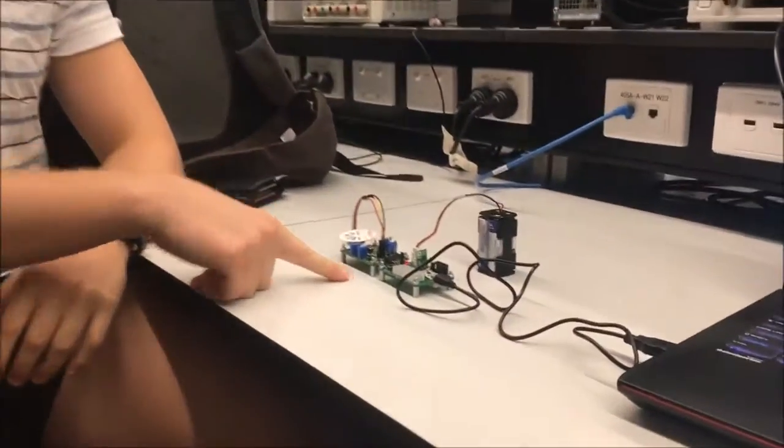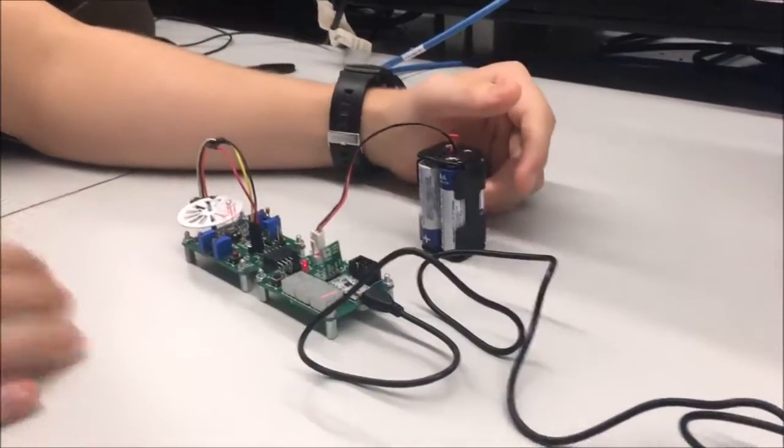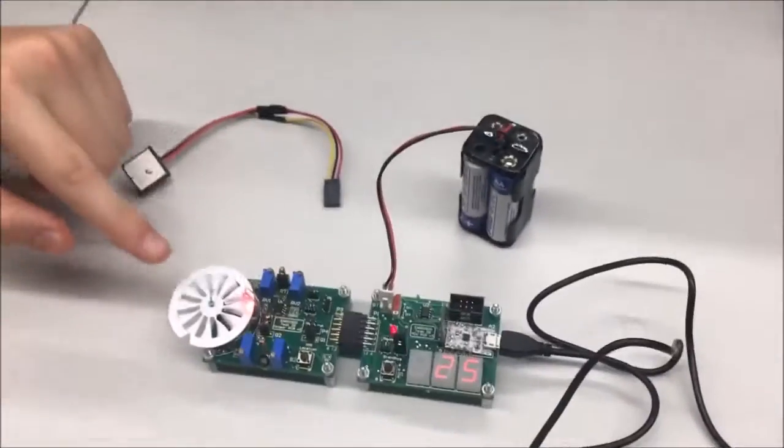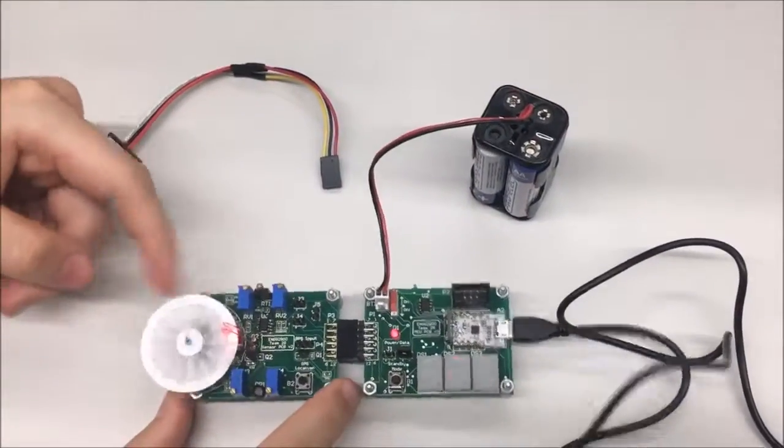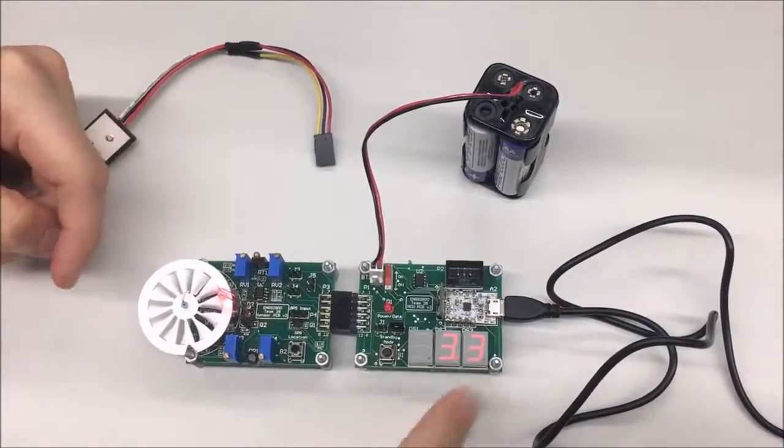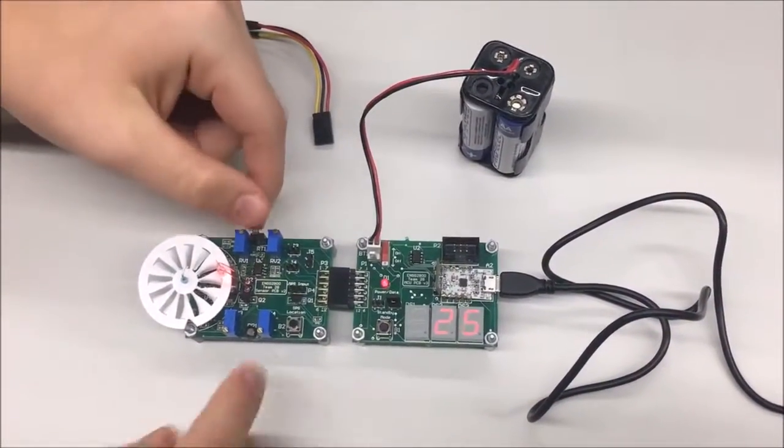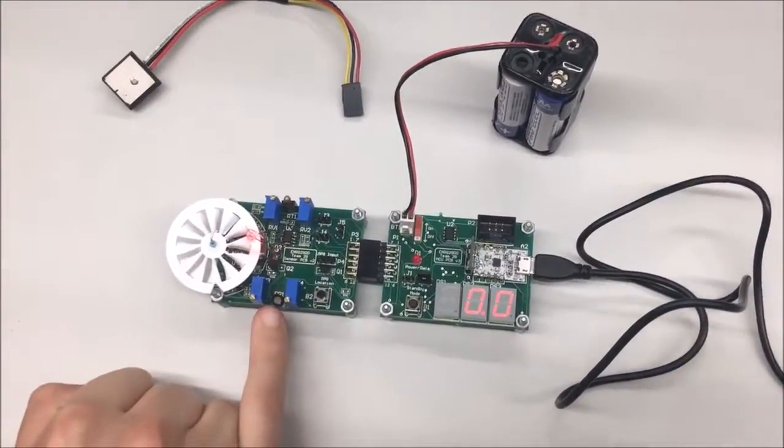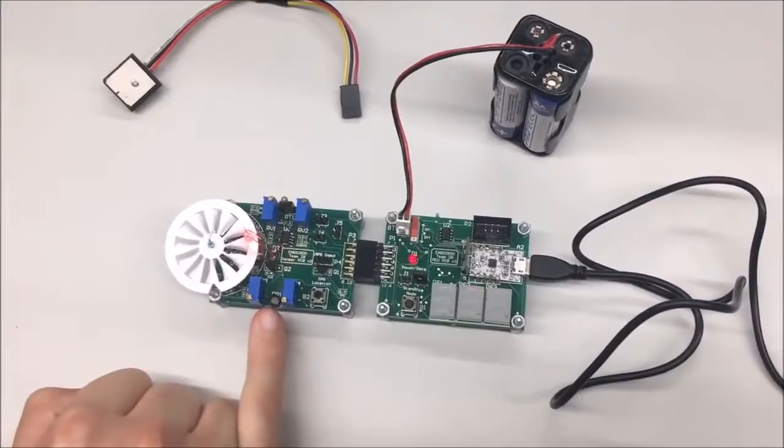So if you come and have a look here, our project was essentially a weather station. You can see here we've got our wind speed sensor, so if I spin this around a bit we'll get a wind reading. We've got a temperature sensor here, a thermistor, a temperature varying resistor, and down here we've got a photoresistor which is a light varying resistor.